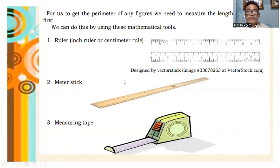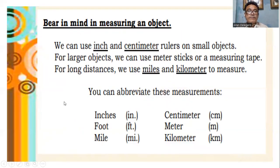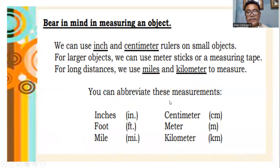To get the perimeter of any figure, we need to measure the length. For small objects we can use the roller — the inch roller or centimeter roller. For larger objects we can use the meter stick and the measuring tape. For long distances, we use miles and kilometers. Abbreviations: in for inches, cm for centimeters, m for meter, and km for kilometer.